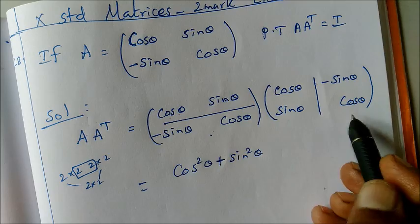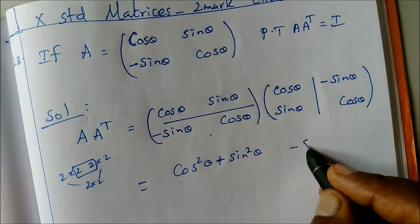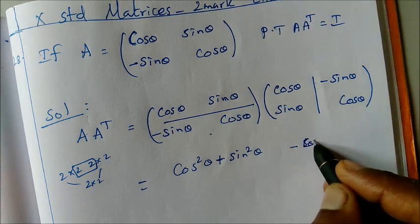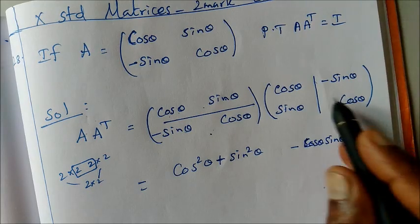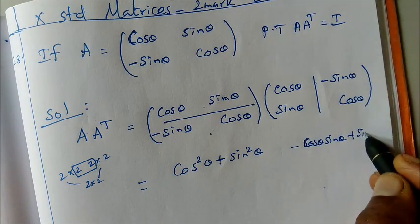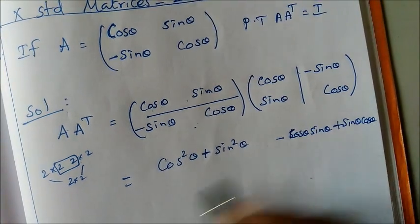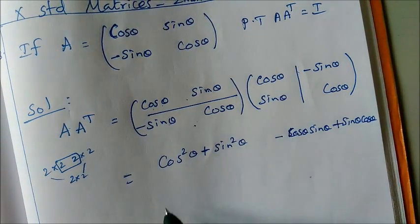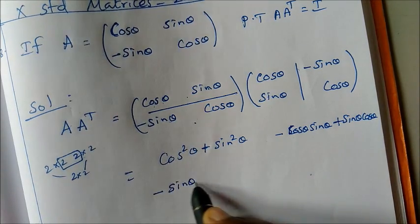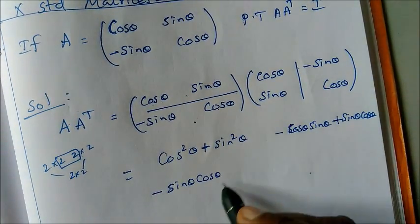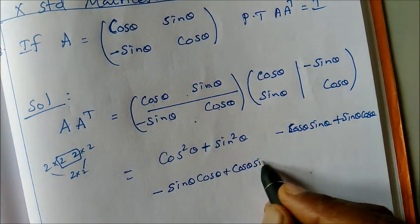First row, second column: plus into minus gives minus cosθ sinθ, plus sinθ into cosθ gives plus sinθ cosθ. Then second row, first column: minus sinθ into cosθ gives minus sinθ cosθ, plus cosθ into cosθ gives plus cos²θ... wait — plus cosθ sinθ.